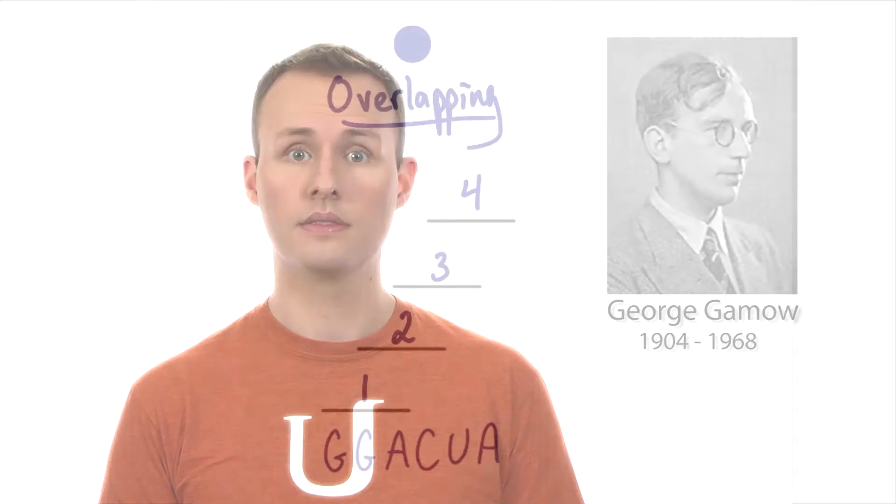Gamow had correctly calculated that three nucleotides was enough to code for all 20 amino acids and then some. But the real question was whether or not the genetic code was overlapping.